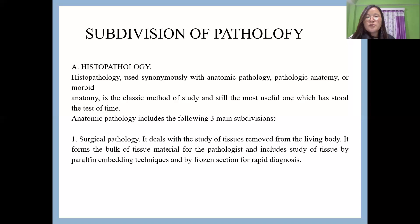There are different subdivisions of pathology. The most important is histopathology, also called anatomic pathology, pathologic anatomy, or morbid anatomy — it is basically the study of tissue. It is divided into three main types. The first is surgical pathology, which is the study of tissue removed from a living body by a surgical procedure.